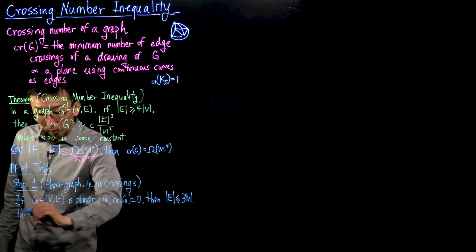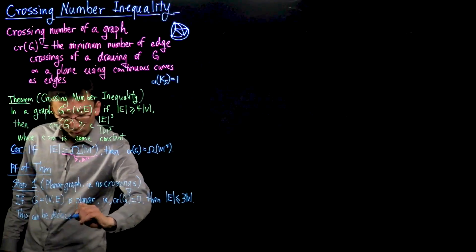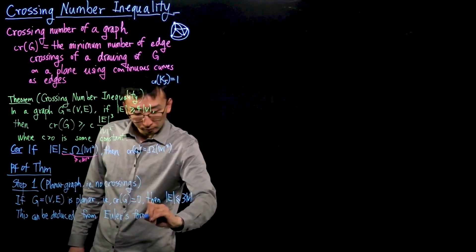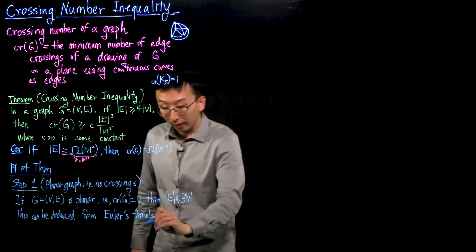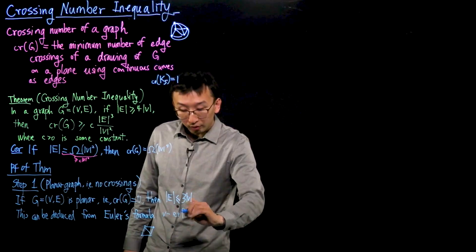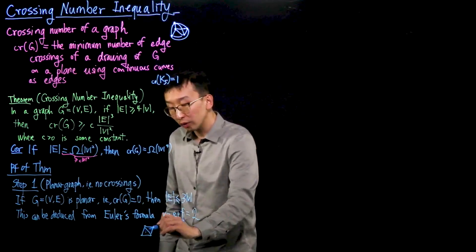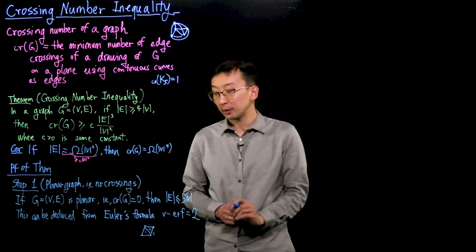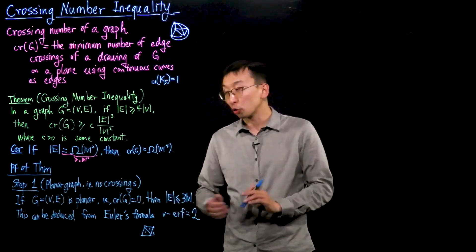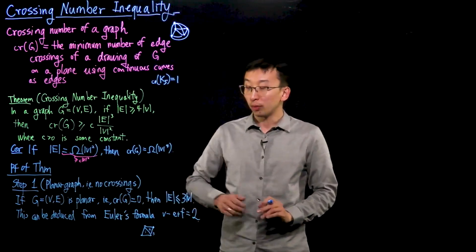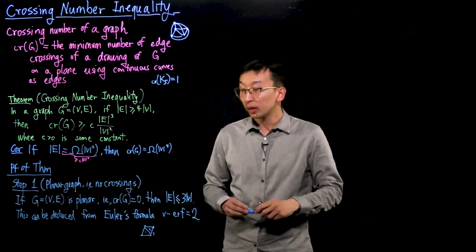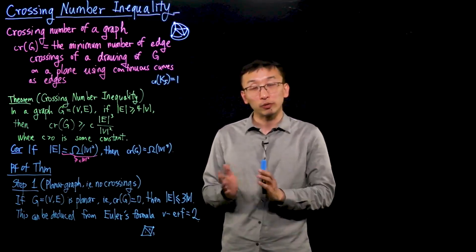This conclusion can be deduced from a fact from topology known as Euler's formula, which says that if you draw the graph in the plane, then the number of vertices minus the number of edges plus the number of faces equals two. Each individual cell as well as the outside cell counts as a face. Starting with Euler's formula, we can put bounds on edges, faces, and vertices to derive this conclusion. I refer you to the lecture notes if you want to see the details.